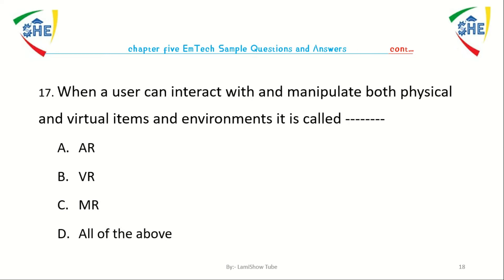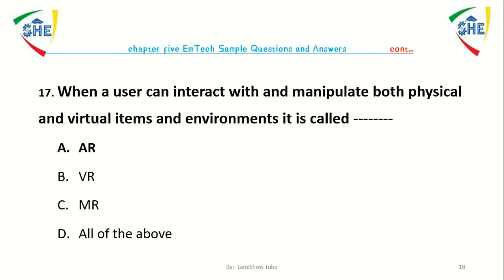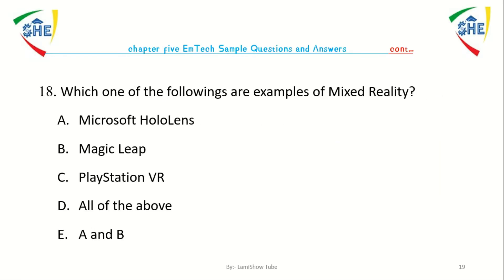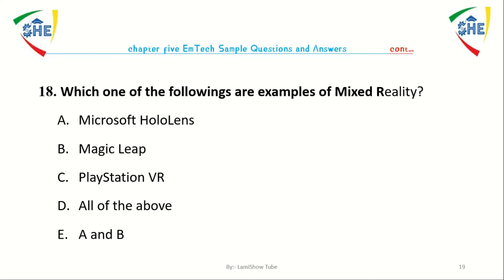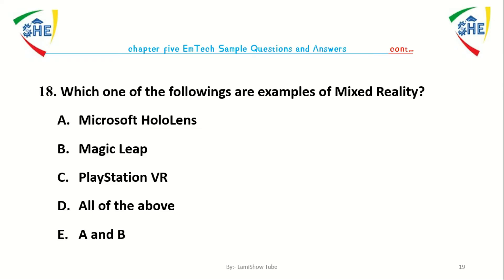Question number 17: When a user can interact with and manipulate both physical and virtual items and environments, it is called dash. Options: AR, VR, MR, All of the above. Question number 18: Which one of the following are examples of mixed reality? Microsoft HoloLens, Magic Leap, PlayStation VR, All of the above.